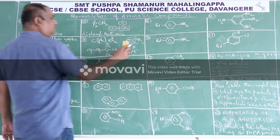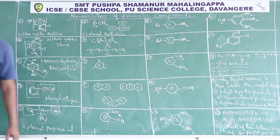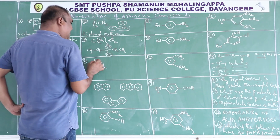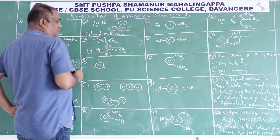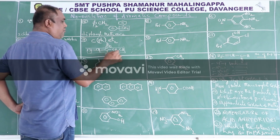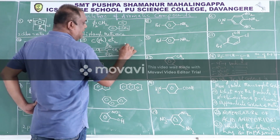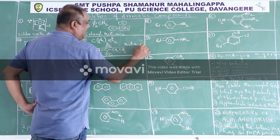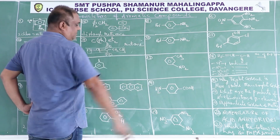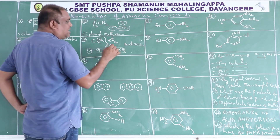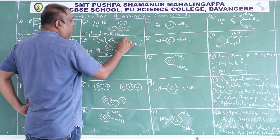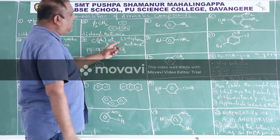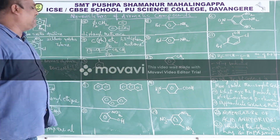So the main chain has 5 carbons, root word is pent, all single bonds, primary suffix is ane, no secondary suffix. To the third carbon two phenyl groups are attached, therefore 3,3-diphenyl is the prefix. The IUPAC name of the 7th compound is 3,3-diphenylpentane.